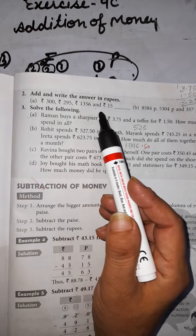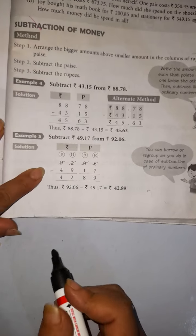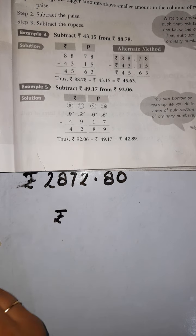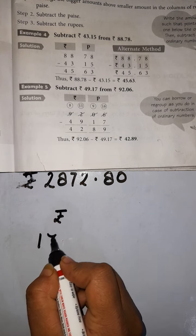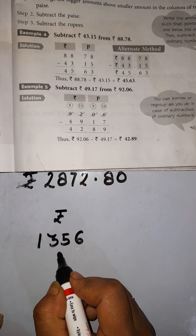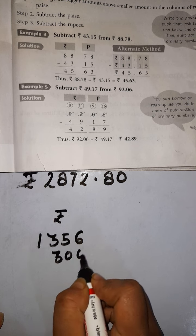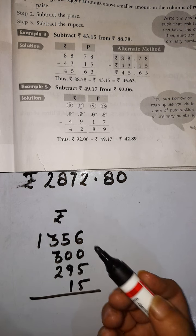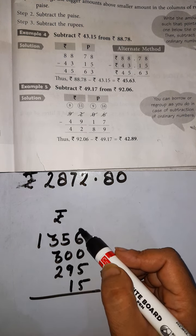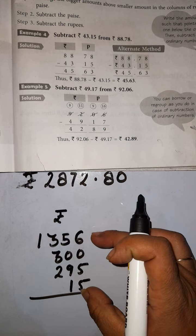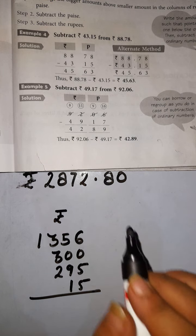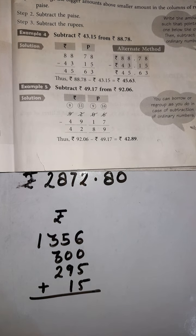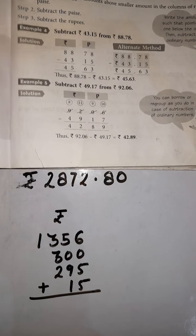Question B: we have to add these amounts and find the answer in rupees. The amounts given are 85 paise and 84 paise — wait, let me clarify: 8,584 paise, 5,304 paise, and 357 paise. First of all we need to convert these paise amounts into rupees. For 8,584 paise: before two digits we put a decimal point, giving rupees 85 and 84 paise.